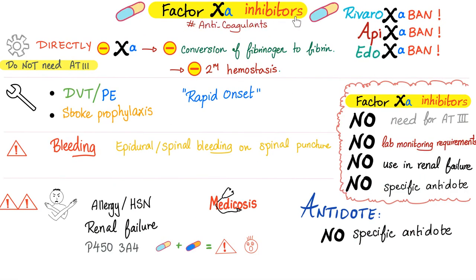Now let's talk about factor XA inhibitors. Look at the names: rivaroxaban will ban factor XA. Pharmacology makes sense — the name has the answer. Also apixaban and edoxaban — all factor XA inhibitors.